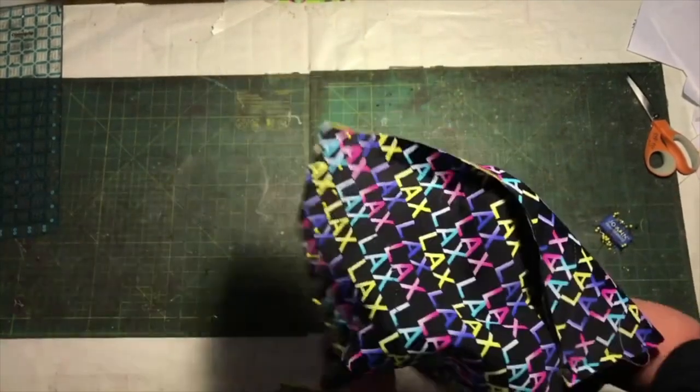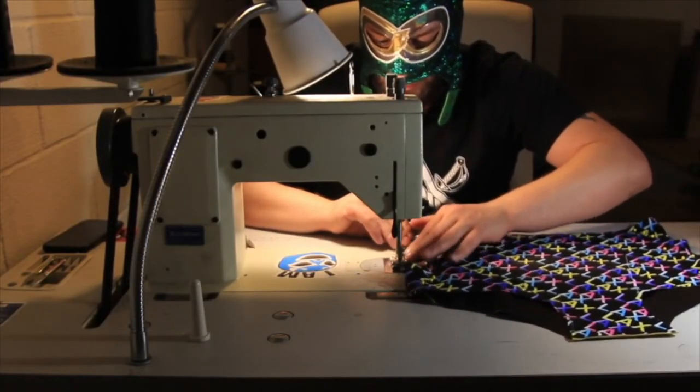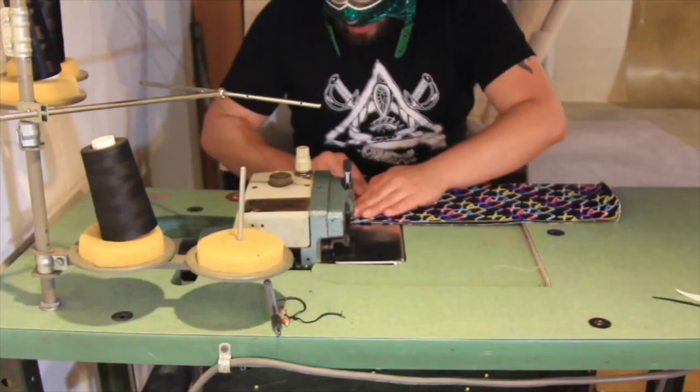We first pin our project right sides together, like always. Then we use our serger to sew up the sides and finish off the raw edges.